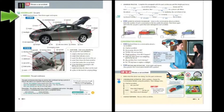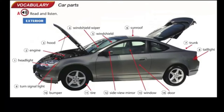Page 40. Vocabulary: Car parts. Exercise A. Read and listen. Exterior: 1. Headlight. 2. Engine. 3. Hood. 4. Windshield wiper. 5. Windshield. 6. Sunroof. 7. Trunk. 8. Tail light. 9. Turn signal light. 10. Bumper. 11. Tire. 12. Side view mirror. 13. Window. 14. Door.